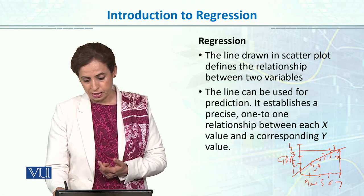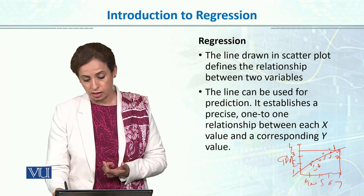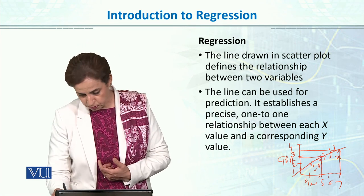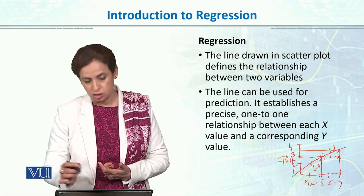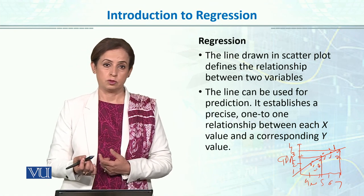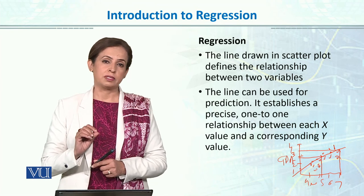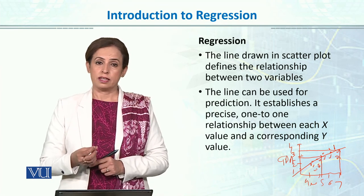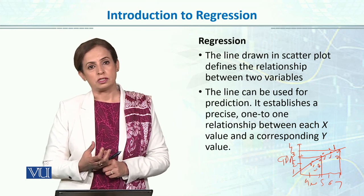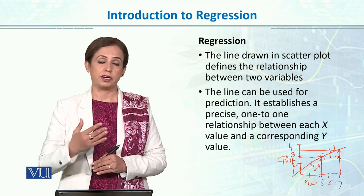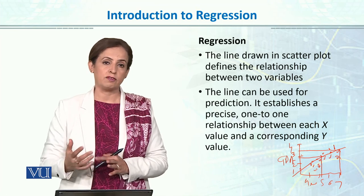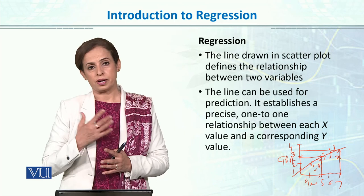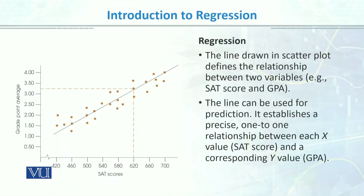For example, if a child has 500 on the SAT, you can go on the line and predict that the GPA will be almost 3. This is called prediction — a very amazing and interesting thing. In psychology, through experimentation and research, most of the time we establish correlation and then we want to predict the Y variable from given data. For that, we use regression.